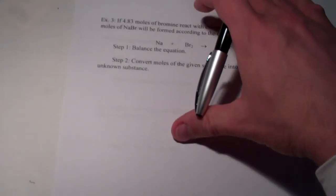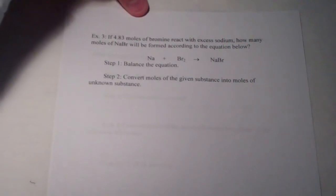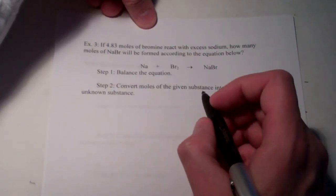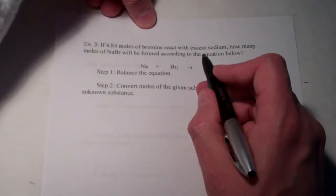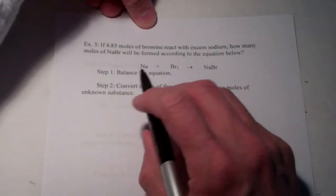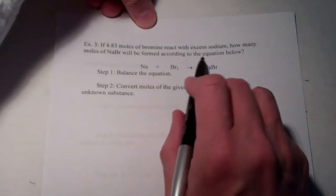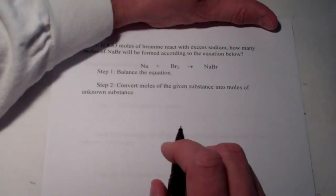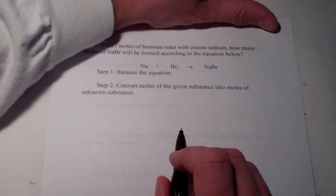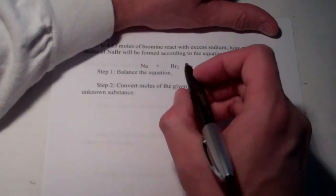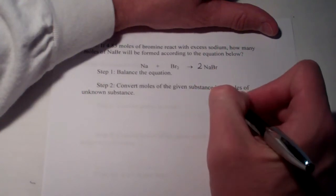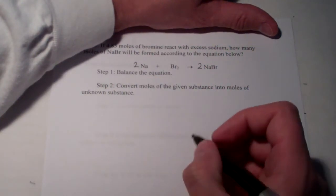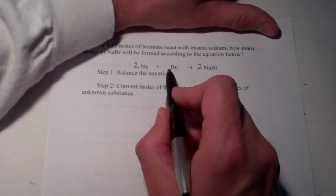Let's take a look at another example. This time, let's use a number that's not as pretty as one or two. Let's use 4.83 moles of bromine. It's reacting with excess sodium. How many moles of sodium bromide will be formed according to the equation above? Step one in all stoichiometry problems should be to balance the equation, because we need to get that mole ratio that we find from the coefficients in the balanced equation. I have two bromines here, and I put a two in front of NaBr to give me two bromines. That gives me two sodiums. So, I'll put a two in front of sodium. My balanced equation is two to one to two.